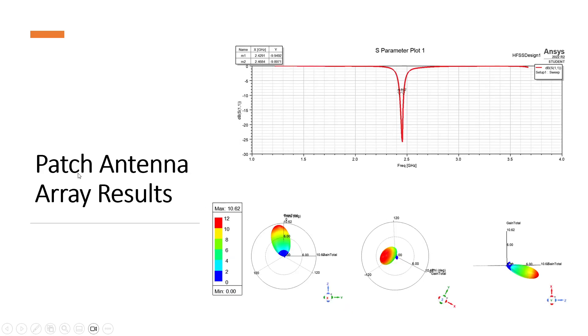Here is my patch antenna array result. Again, we see that the operating frequency, 2.45 GHz, provides a good, even better return loss characteristics.